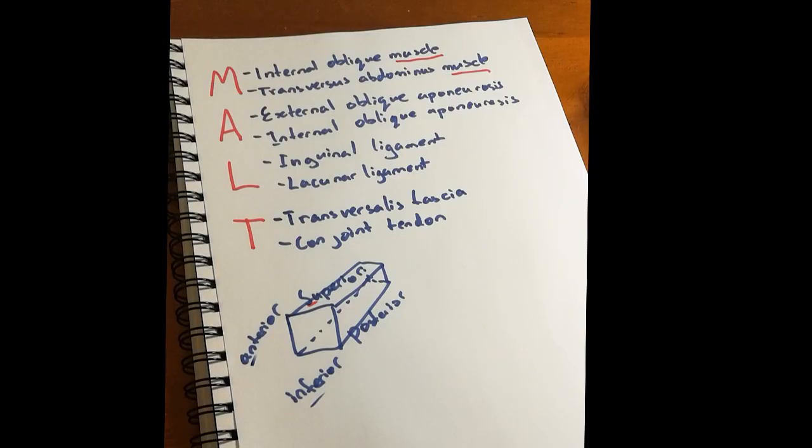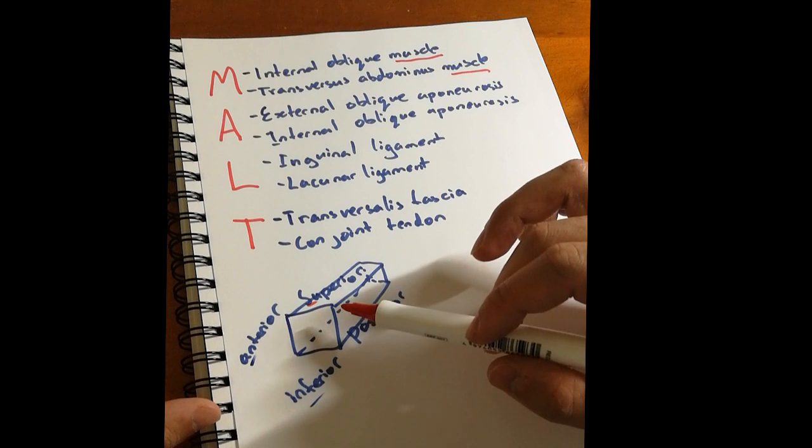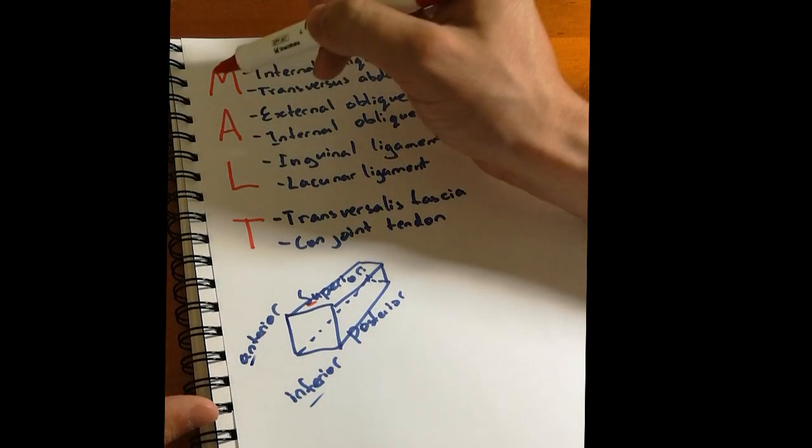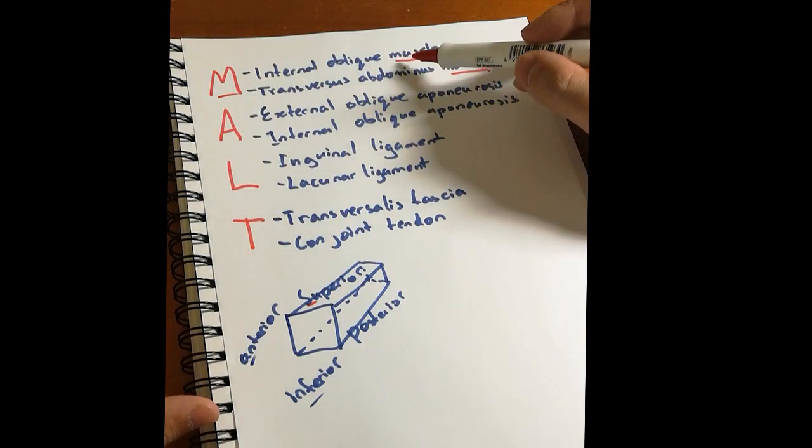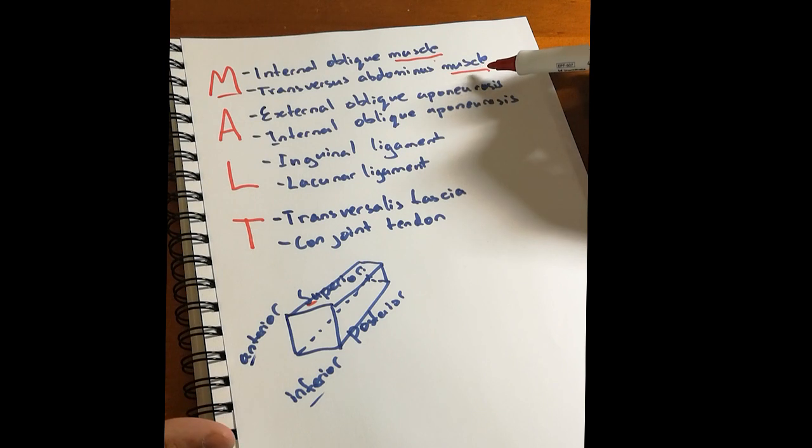So to summarize the inguinal canal, the superior border is formed by two muscles from the M in MALT: the internal oblique muscle and the transversus abdominis muscle.